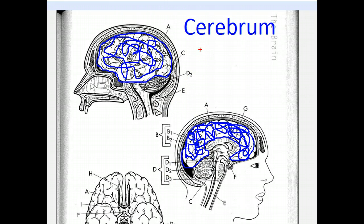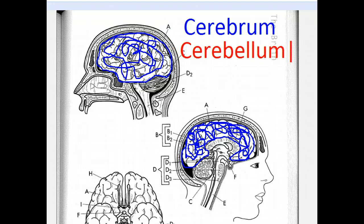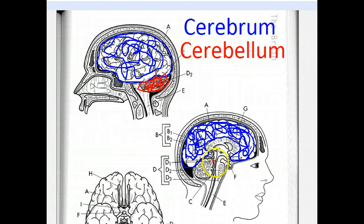The next part we need to identify is the cerebellum. If you can find your cerebrum, the cerebellum is located at the back of the skull, below the cerebrum. This area here is the cerebellum — remember, it balances your muscle movements. In the cross section, you look under the cerebrum and find the part that looks like a tree with a circle around it — that is your cerebellum. By this point you should be able to identify the cerebrum and the cerebellum on a diagram.